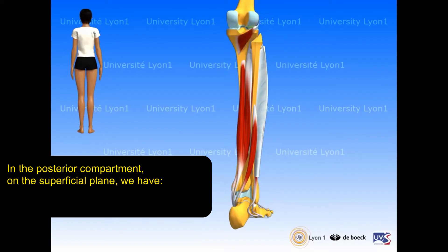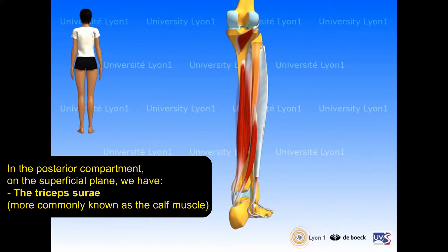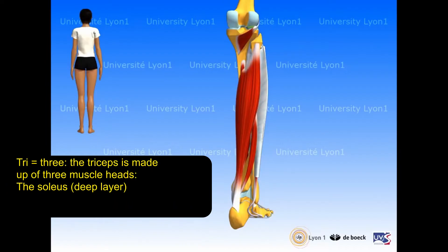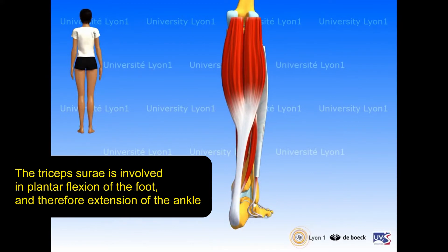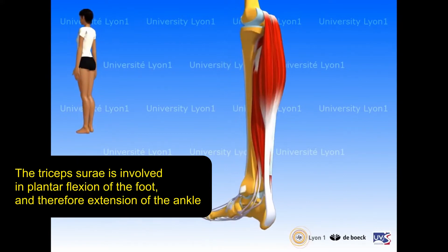In the posterior compartment, on the superficial plane, we have the triceps surae, more commonly known as the calf muscle. Tri equals three — the triceps is made up of three muscle heads: the soleus, a deep layer covered by two gastrocnemius muscles, medial and lateral. The triceps surae is involved in plantar flexion of the foot and therefore extension of the ankle.